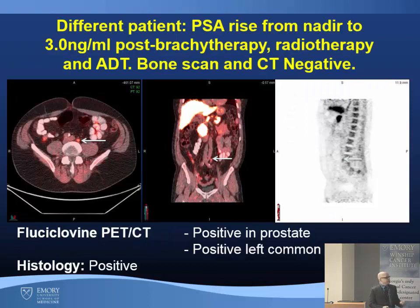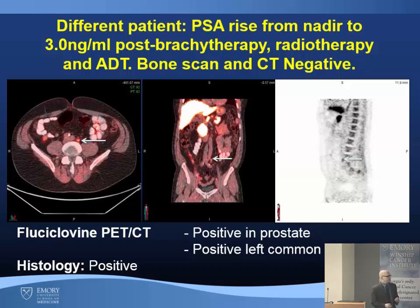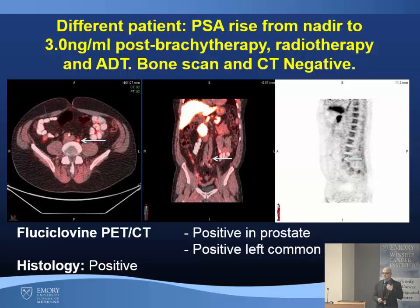This is a different patient with a PSA rise from nadir PSA to 3 nanograms per ml post-brachytherapy, radiotherapy, and androgen deprivation therapy. Bone scan and CT were negative. With fluciclovine PET, a different type of radiotracer I'll be talking about, we found positive activity in the prostate and also a positive left common iliac node. This was histologically positive and obviously influences the approach to the patient.